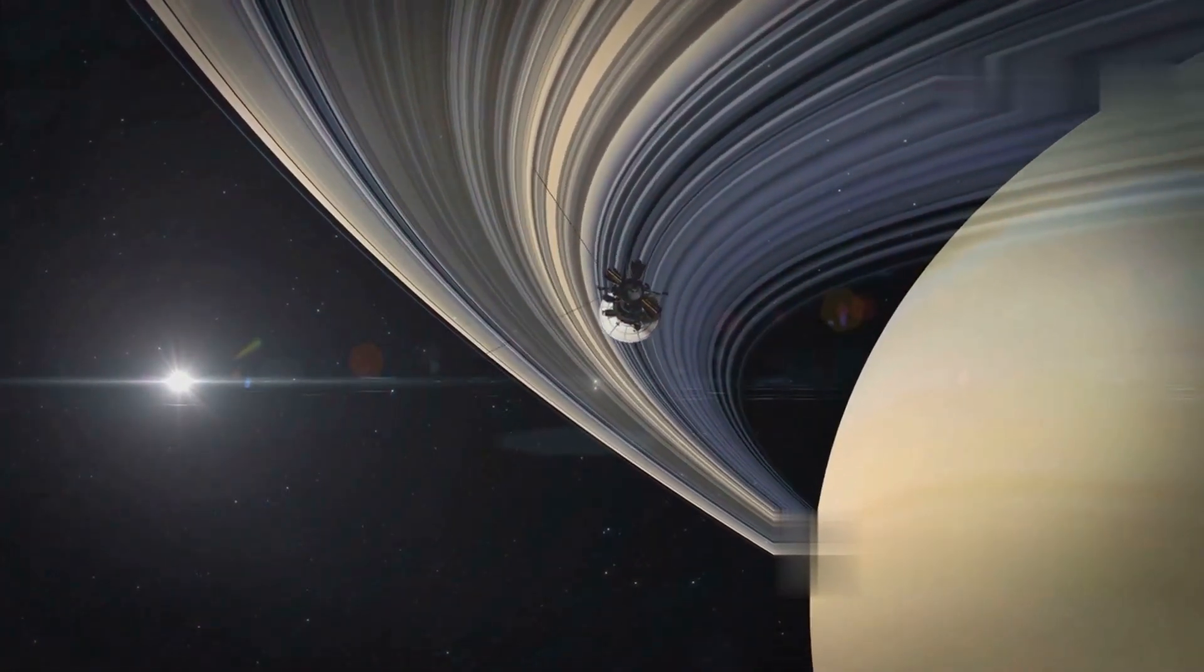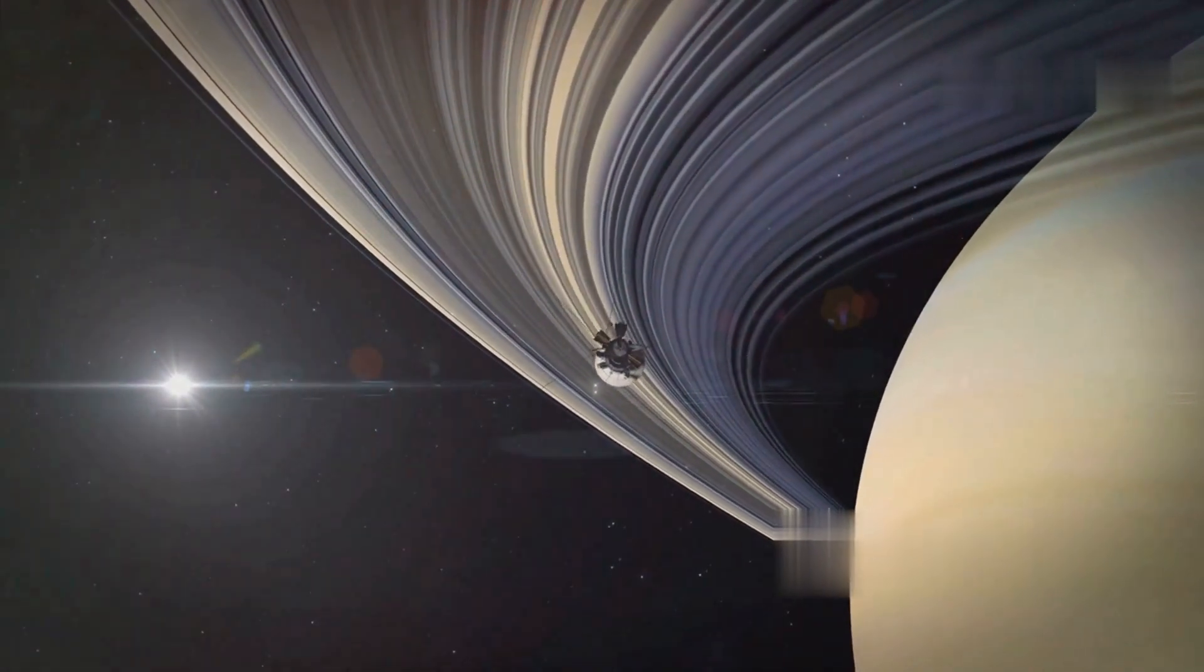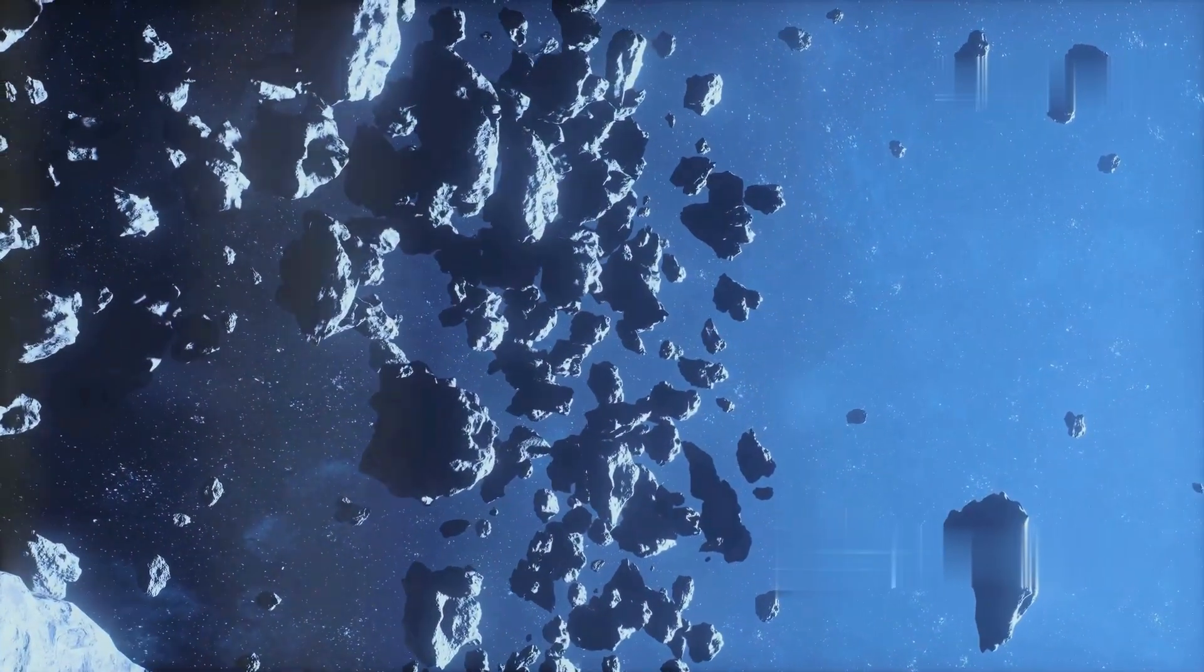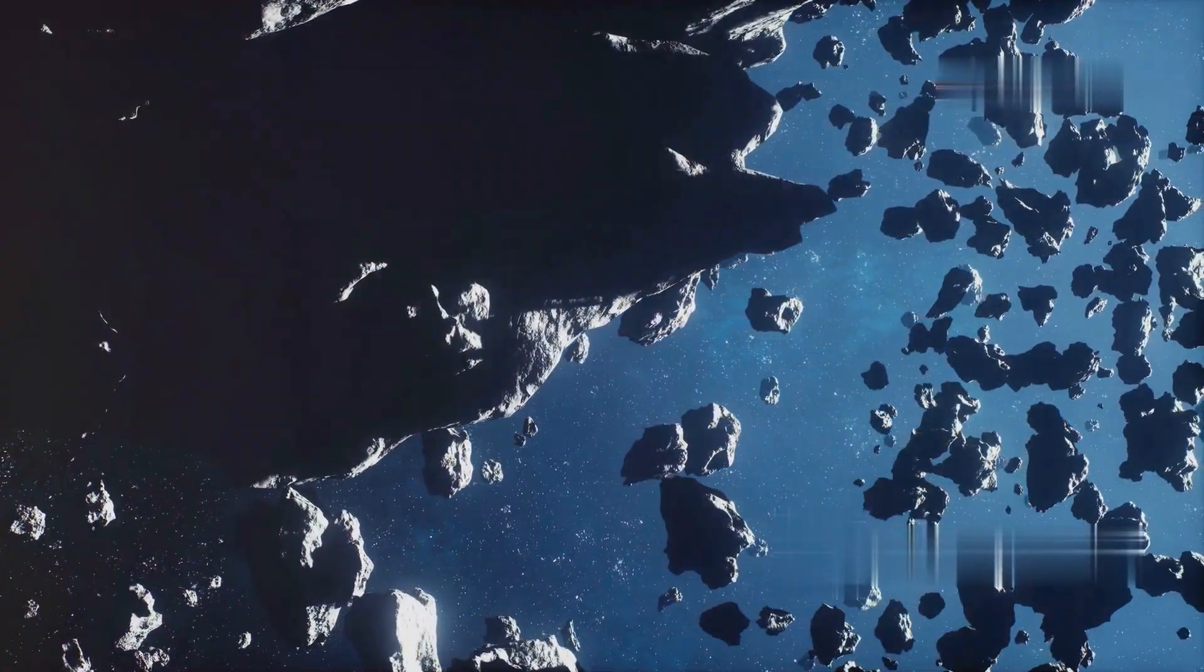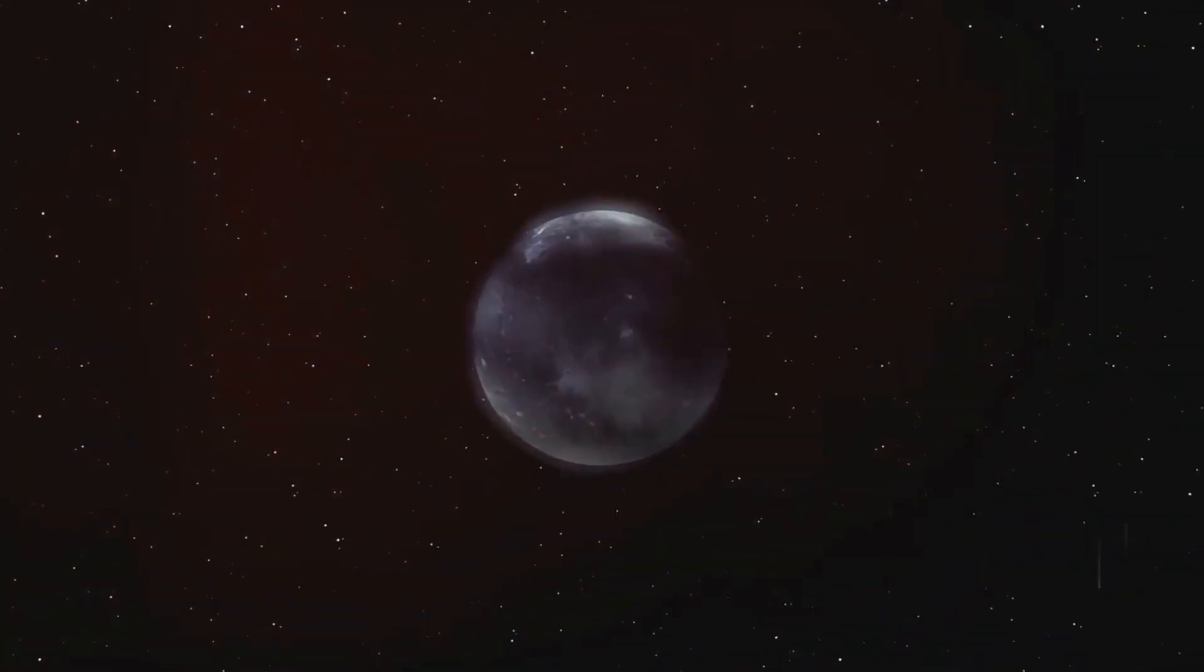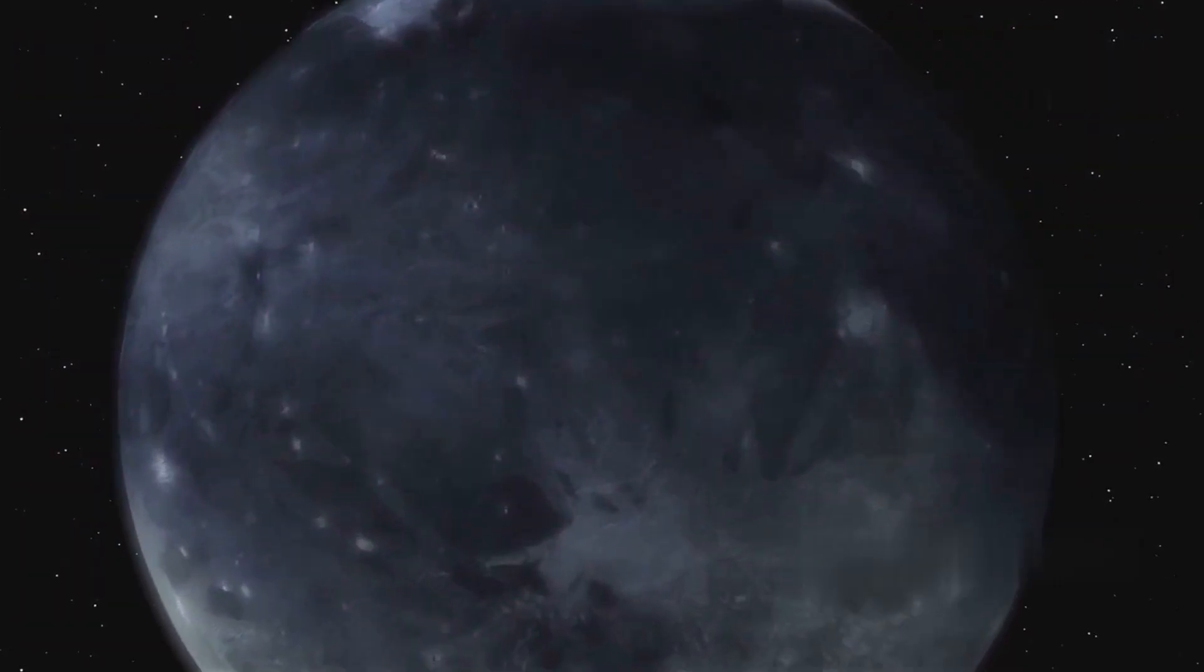They also have numerous moons and, in the case of Saturn, stunning rings. Even further still lies the Kuiper belt, a region of icy bodies similar to the asteroid belt. This distant area is home to many small, icy objects that orbit the sun. This is where we find dwarf planets like Pluto, which was once considered the ninth planet of our solar system before being reclassified.